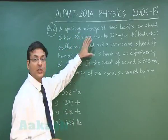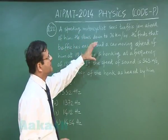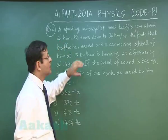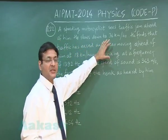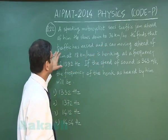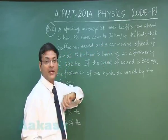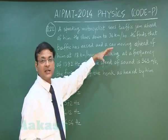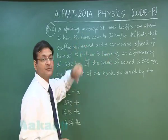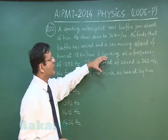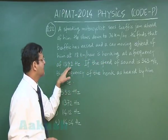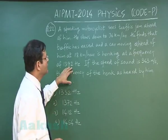It says that a speeding motorcyclist sees traffic jam ahead of him. He slows down to 36 kilometer per hour. This unit is to be changed in meter per second. He finds that traffic has eased and a car moving ahead of him - this car will work as source and this motorcyclist will work as listener here - at 18 kilometer per hour is honking at a frequency 1392 hertz.